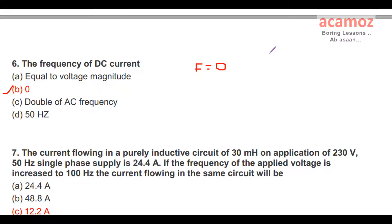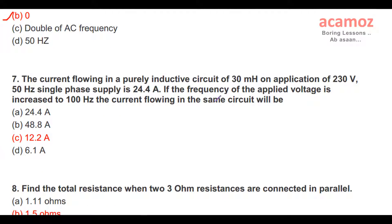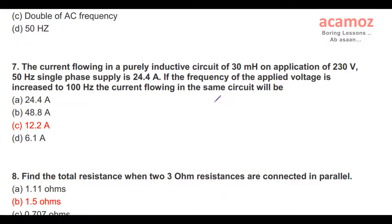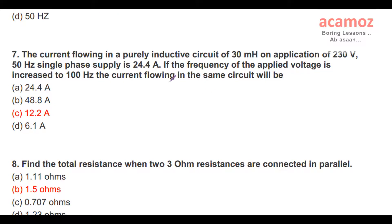Seventh question: The current flowing in a purely inductive circuit of 30 millihenry on application of 230 volt, 50 hertz single phase supply is 24.4 ampere. If the frequency of the applied voltage is increased to 100 hertz, then the current flowing in the same circuit will be? In a circuit having inductive value 30 millihenry, voltage 230 volt, and current 24.4 ampere, the supply frequency is 50 hertz. If this frequency is increased to 100 hertz...